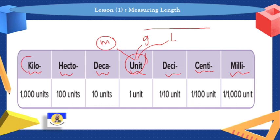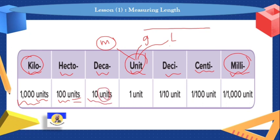Now I'm speaking about ordering from the greatest — which is kilo — to the smallest — which is milli. The order from greatest to smallest: kilo has one thousand units. For example, one kilometer has one thousand meters. Hectometer has one hundred meters. Decameter has ten meters.